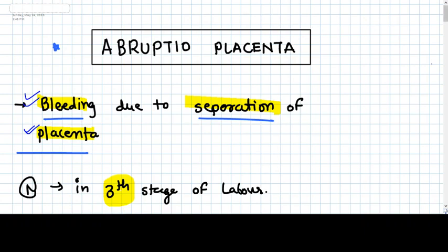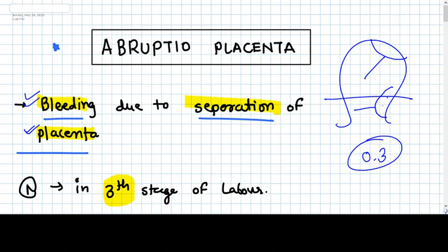In abruptio placenta, the placenta is attached in the upper uterine segment, like normally it should be. While in placenta previa, it was attached into the lower uterine segment, which it should not be. The incidence was 0.3% in placenta previa. So only 0.3% of placentas are present in lower uterine segment in term pregnancy. All other placentas are implanted in upper segment.